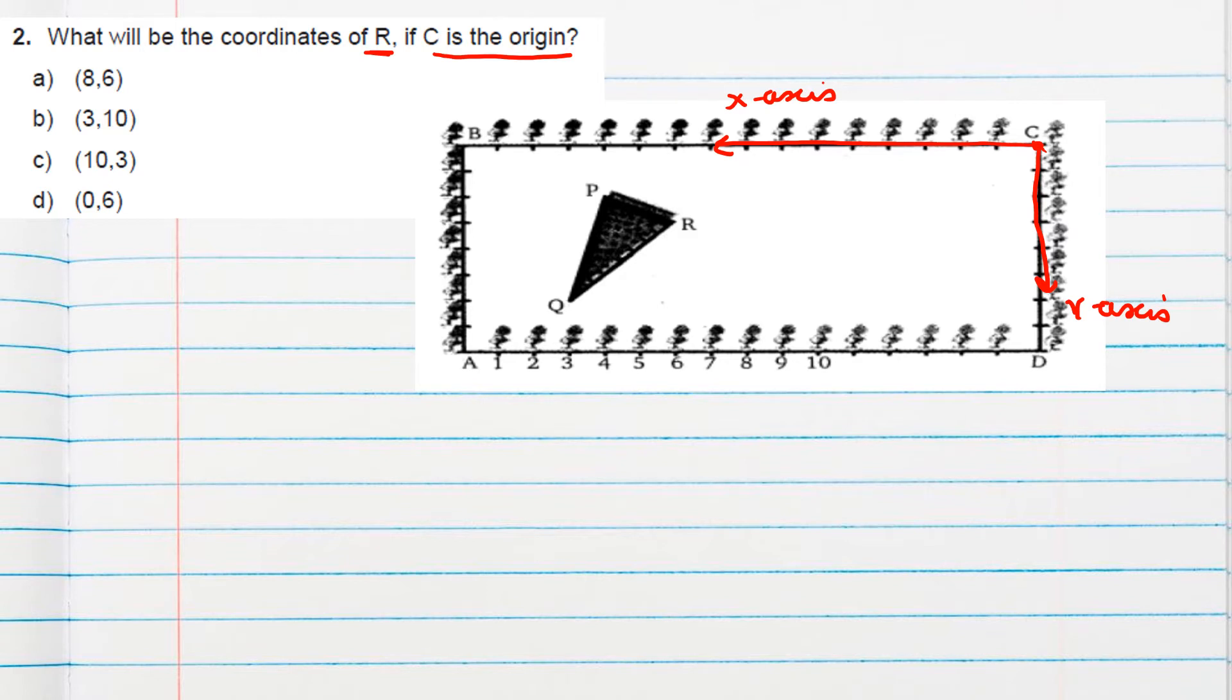Okay, so coordinates of R we need. So 1, 2, 3, 4, 5. So if I draw perpendicular line on y-axis, I will get 3 as a y coordinate. And what will be the x coordinate here? 1, 2, 3, 4, 5, 6, 7, 8, 9, 10. Okay, 10 will be the x coordinate. 10 comma 3.